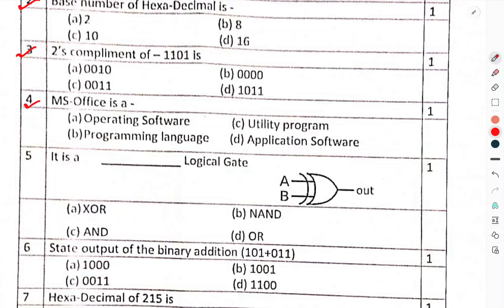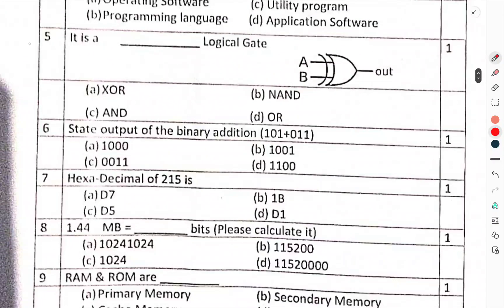Question number 4: MS Office is a... Which option is correct? You have to tell. It's a logical gate. Which gate is it? AND gate, NAND gate, NOR gate - which gate is it? You have to tell.